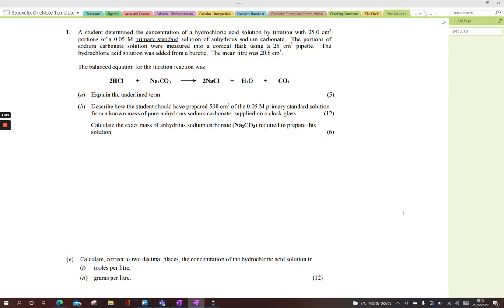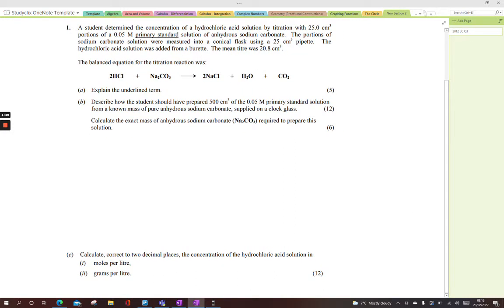The question asks: describe how the students should have prepared 500 cm³ of the 0.05 M primary standard solution from a known mass of pure anhydrous sodium carbonate supplied on a clock glass. They've weighed out the sodium carbonate on a clock glass, which is similar to a weighboat. It's ready to go. You have to go through all these steps logically. It's in a clock glass, next thing it's going into is a beaker.